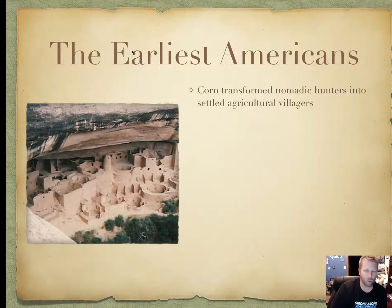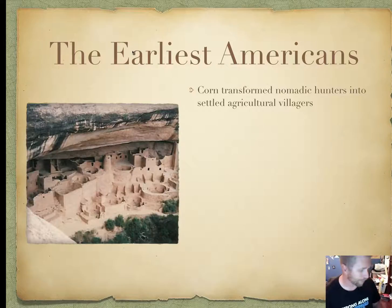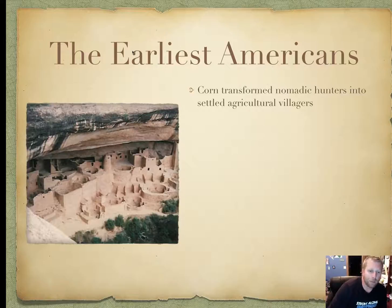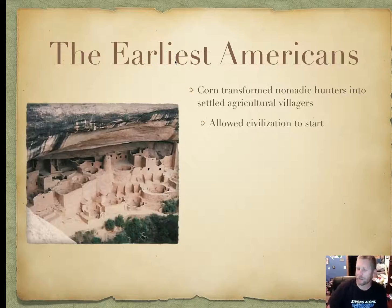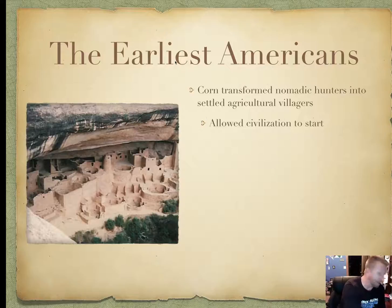The earliest Americans: corn transformed nomadic hunters into settled agricultural villages, much like the agricultural revolution in the Middle East did. It allowed civilization to start. They needed record keeping and came up with writing systems. They weren't always on the run trying to kill stuff, so they could think and improve society.